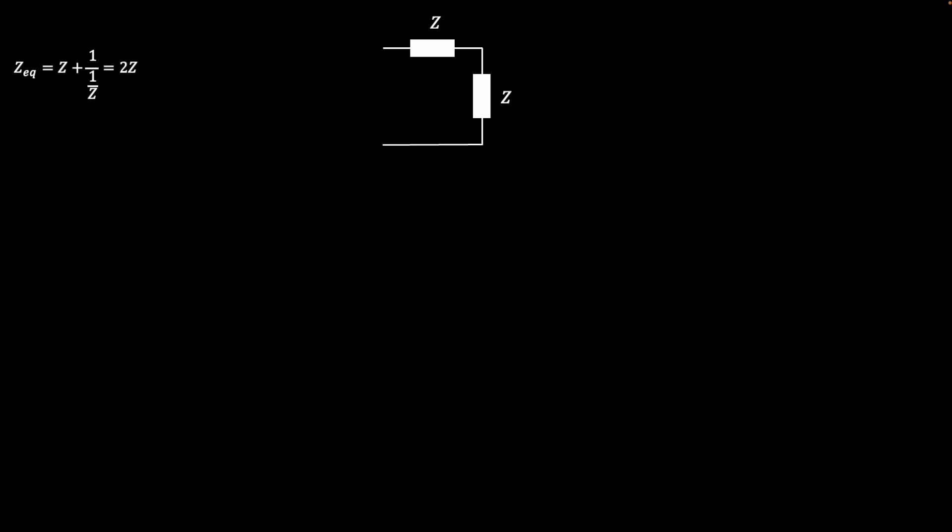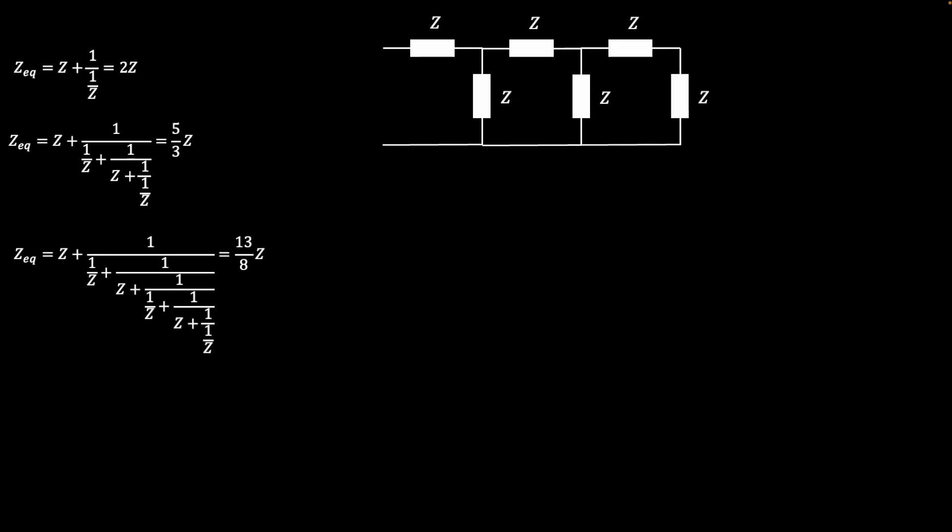A notable example is a ladder network with all impedances equal to the same value, which I will call z. The first segment of this ladder gives a total impedance of 2z. The total impedance for two segments is 5z over 3, three segments adds to 13z over 8, and four segments is 34z over 21. These numbers may appear familiar to some because they're the Fibonacci numbers.